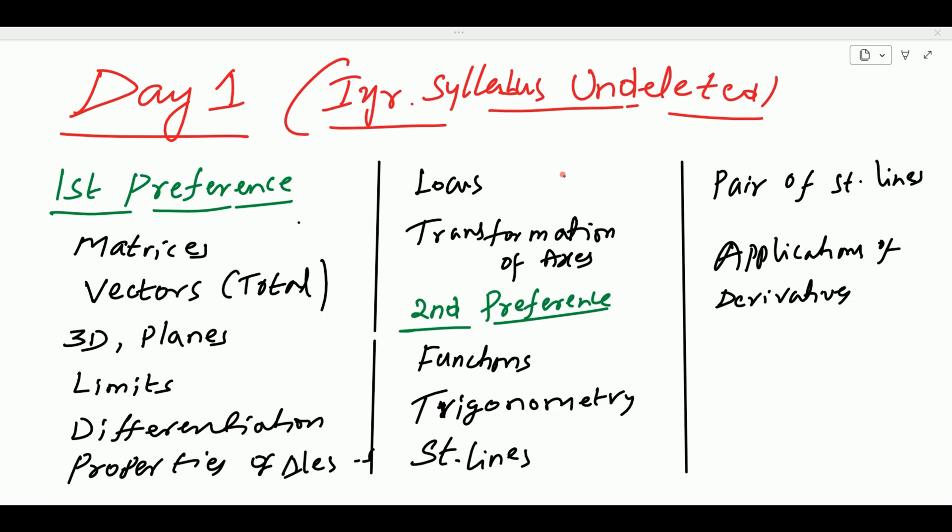The matrices have determinant parts — the determinant part is deleted. So vectors are totally for revision. Vectors include addition and product of vectors. Vectors are very easy; formulas are very easy to use. The 3D planes are difficult. For 3D geometry, DRs and DCs are important to use.